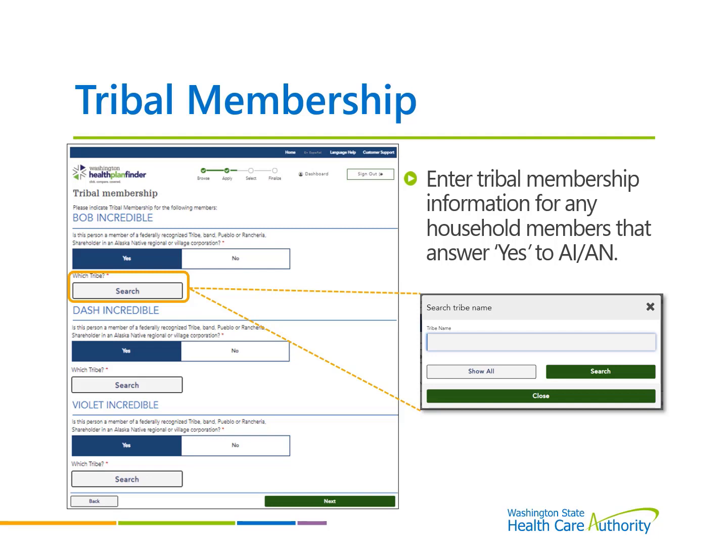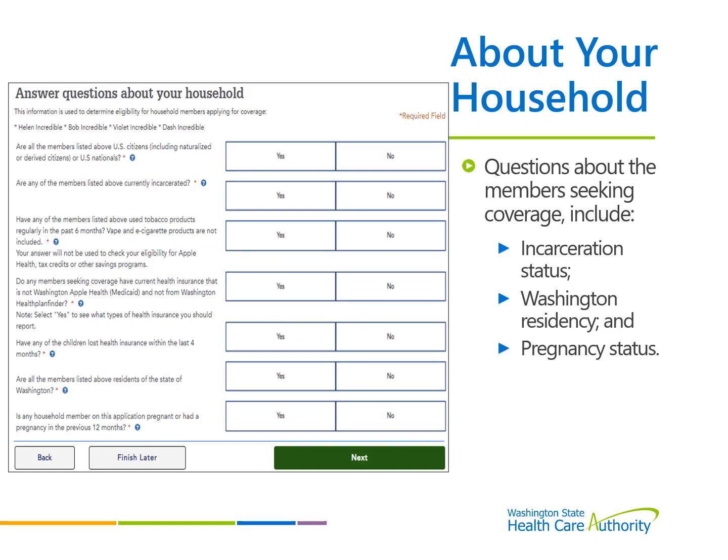Additional questions about the household members seeking coverage are asked on this page. Indicate household members' citizenship or immigration status, incarceration status, Washington residency, and pregnancy status for each household member requesting Apple Health coverage. It is important to note that the request for pregnancy status is for the last 12 months and not just whether the client is currently pregnant.